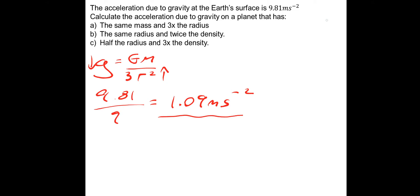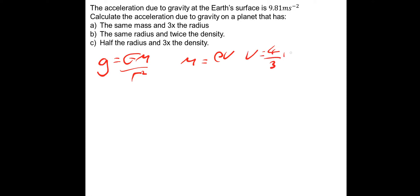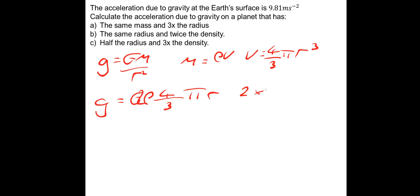Part B: same radius and twice the density. Going back to g equals G·ρ·(4/3)·π·r, substituting in density×volume for mass and simplifying: same radius, twice the density gives 2g. And 2g is 2 times 9.81, which gives a gravitational field strength of 19.62 metres per second squared.